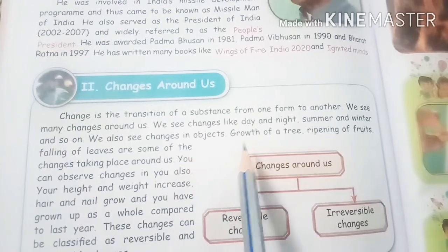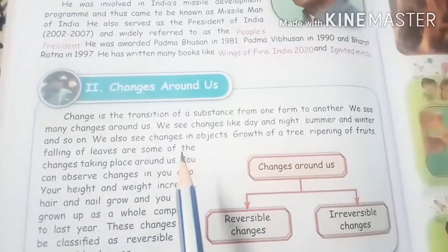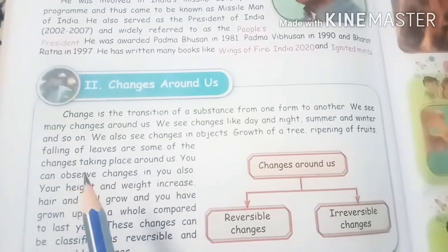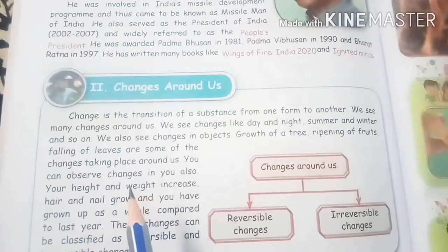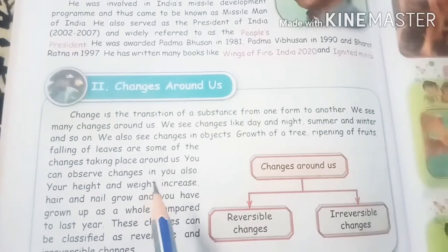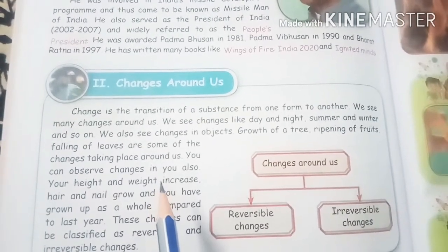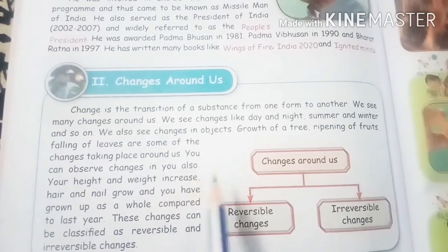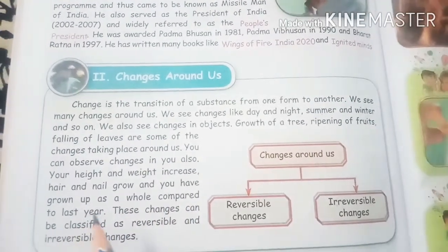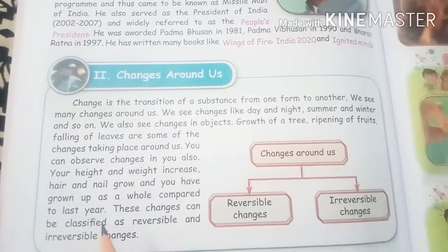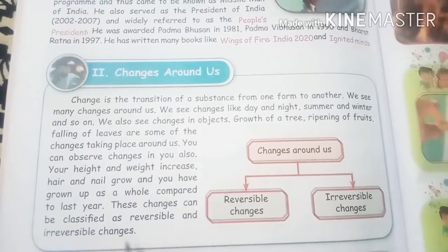If we look at our own body, we can observe changes. You can see the growth of a small sapling into a big tree. You can find changes even in yourself. You were born as a kid and have been growing — now you are 10 to 11 years old. Your height and weight increase, your nails and hair grow, and you have grown compared to last year. These changes can be classified as reversible and irreversible.